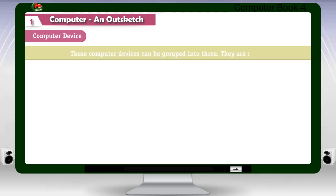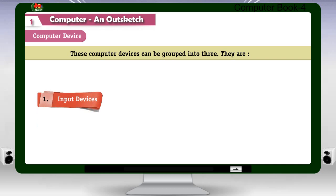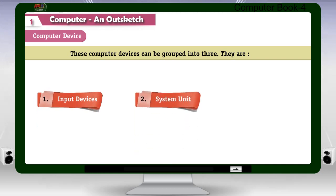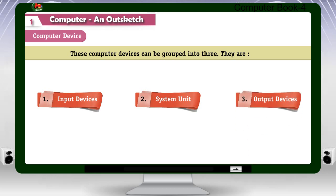These computer devices can be grouped into three. They are: 1. Input Devices, 2. System Unit, 3. Output Devices.